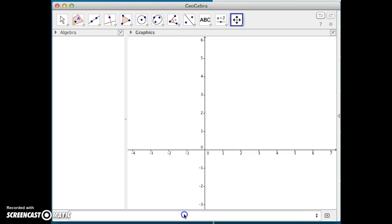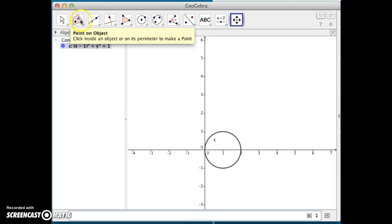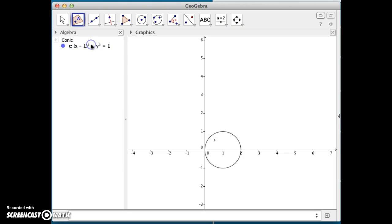So, to do the first region, I'll do a circle centered at the point 1, 0 with a radius of 1. There's my circle, and what I want to do is, my strategy is going to be put a point on the object, I'll call it point A there,